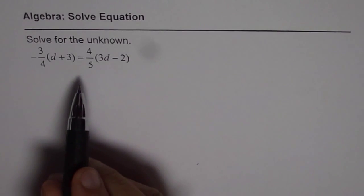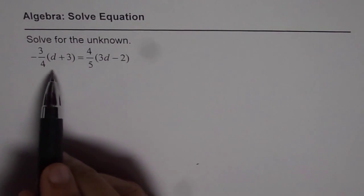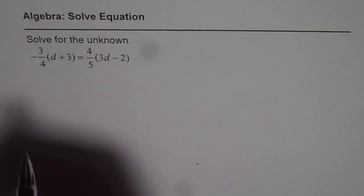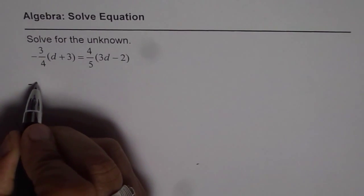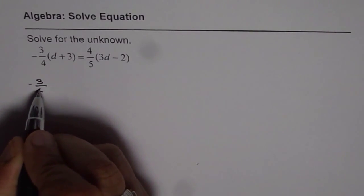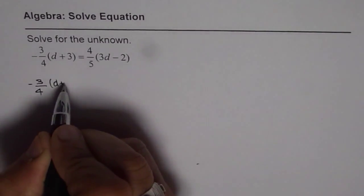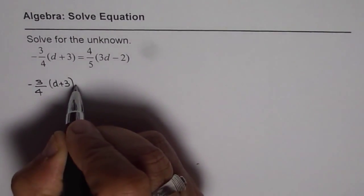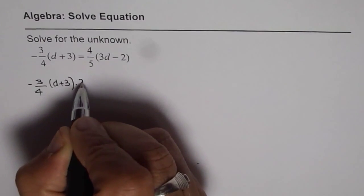You can also treat this as multiplying both sides by the common denominator, which is 20. We get minus 3 over 4 times (d plus 3). Let us multiply by the common denominator, which is 4 times 5, equals 20.